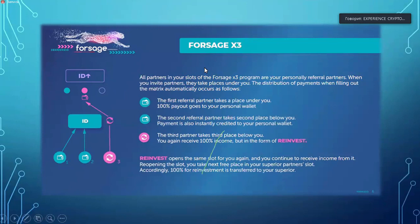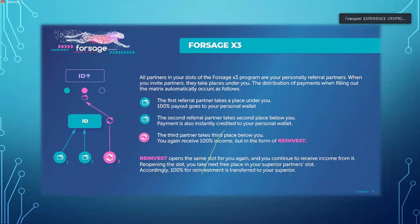Let's talk about Forsage X3 — what I like to call the active side, where you are actively bringing in referrals, whether sharing this with friends, neighbors, co-workers, or whoever you're actively bringing in as partners. All partners in your slots are known as your personal referrals. You are essentially filling up these slots yourself actively.